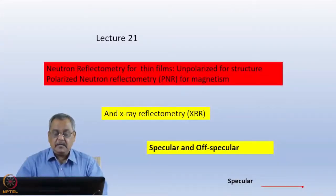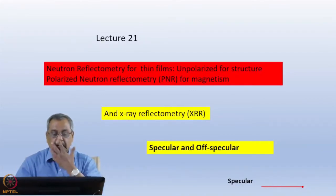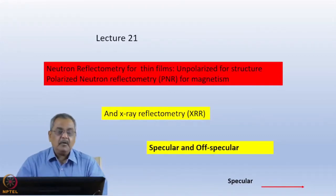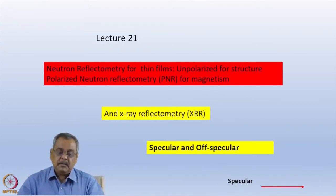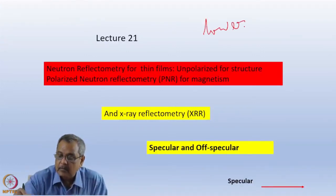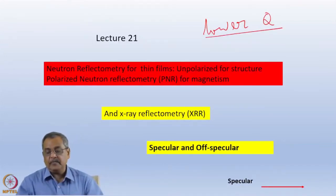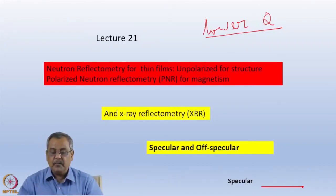From this lecture we will start our discussion on Neutron Reflectometry. Till now we have discussed mesoscopic structure studies using neutrons at low Q range. I have gone through the experiments that you can do using long wavelength neutrons because you will be working at lower Q, or lower momentum transfer range. Now another leg of these mesoscopic structure studies are thin films and multilayers, where we will be using the technique of Neutron Reflectometry.